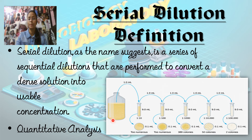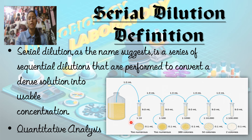Usually when we take a sample, it is very concentrated and contains millions to trillions of microbes, and we are unable to examine it directly. So in order to perform experiments or to analyze them, we serially dilute them. Basically, it is a quantitative analysis to count the number of colonies.